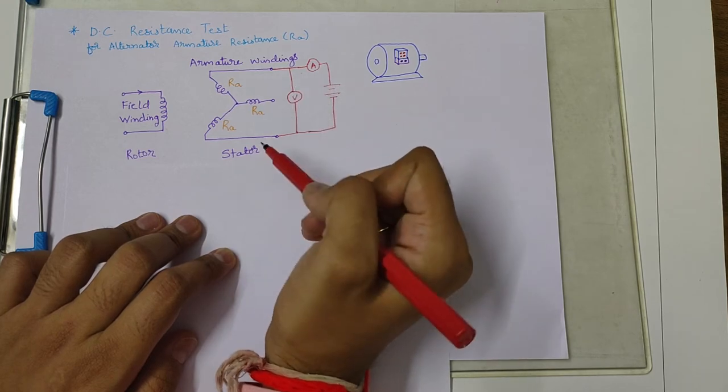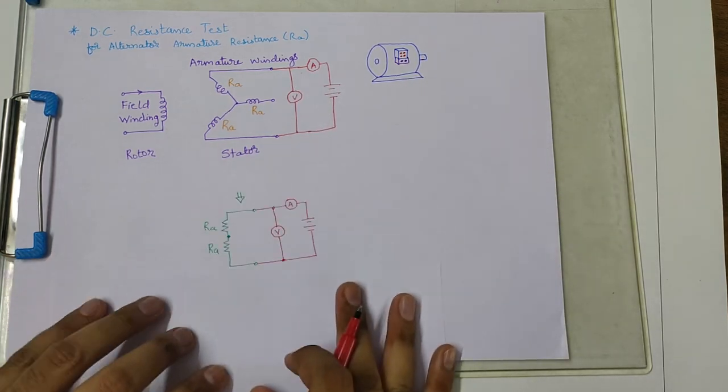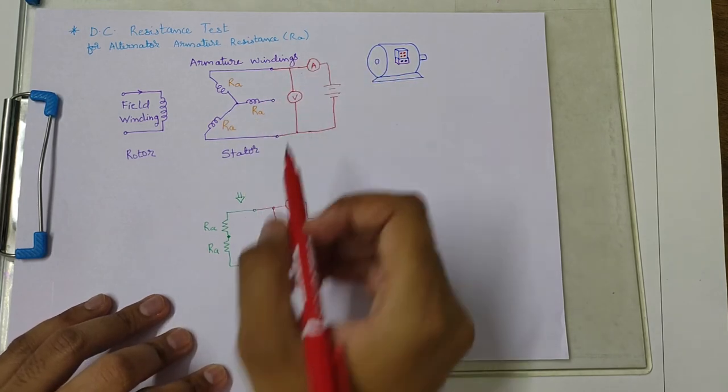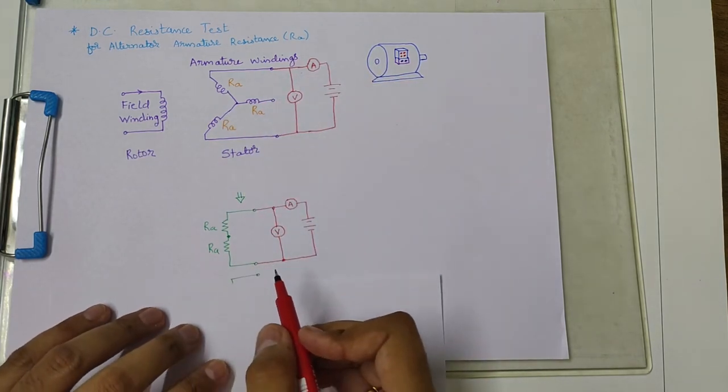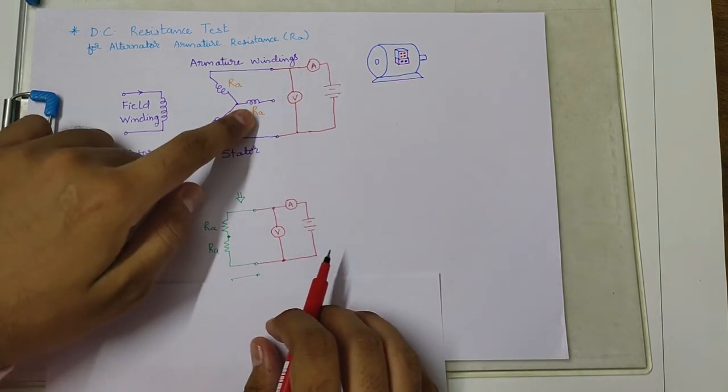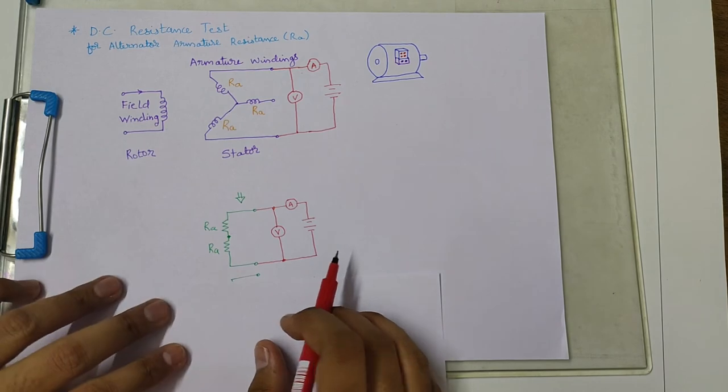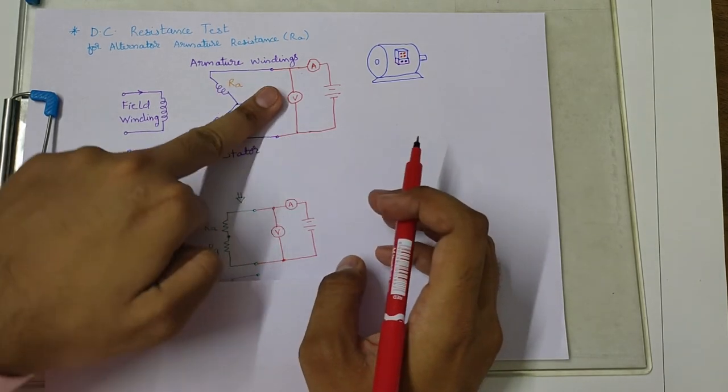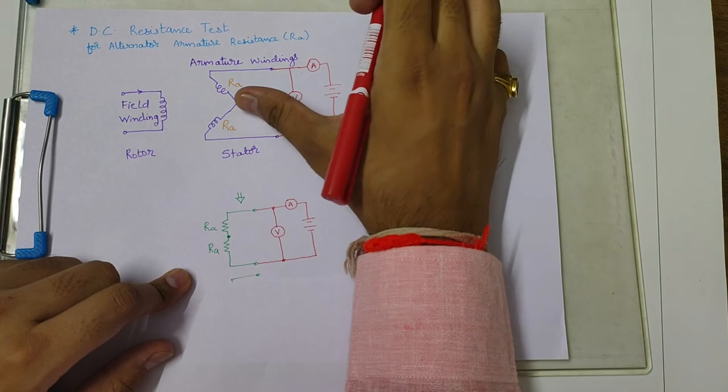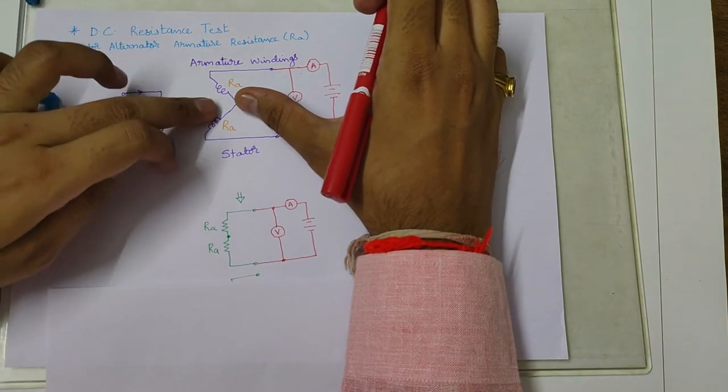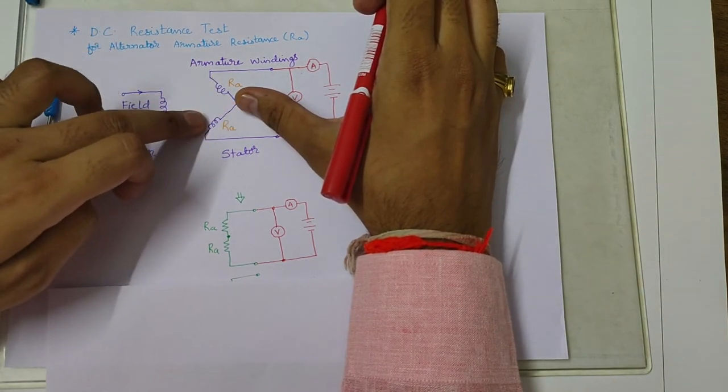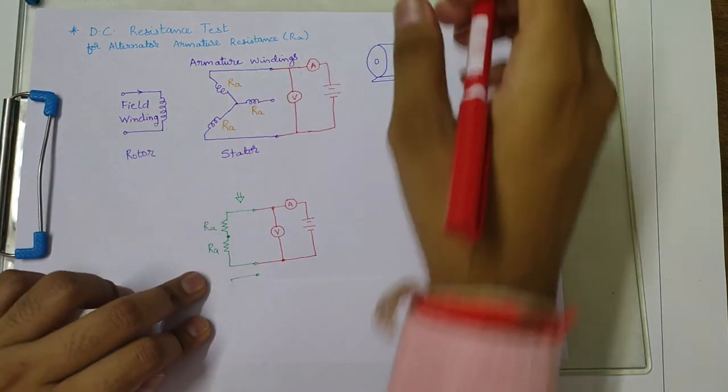Now we can represent this circuit as shown here, because as you can see, this terminal of armature resistance is remaining open, so this can be considered as not in the circuit. So you can remove it from the circuit, and we now only have two resistances, two windings in series.